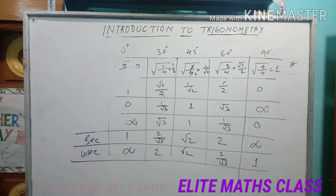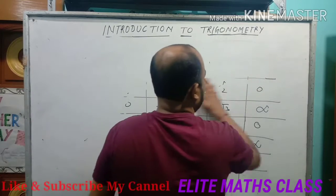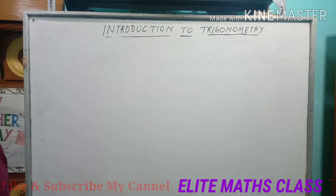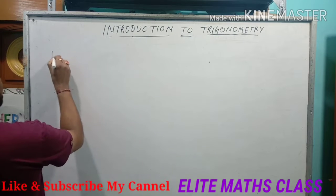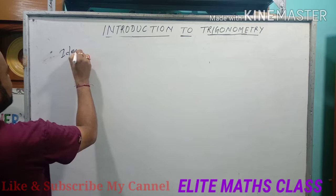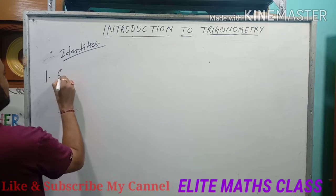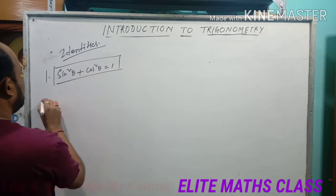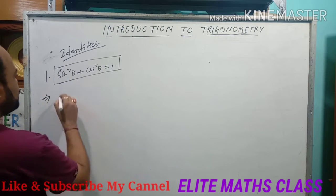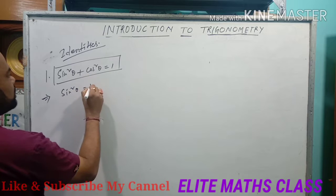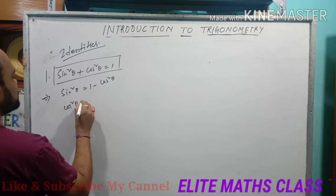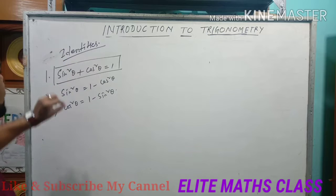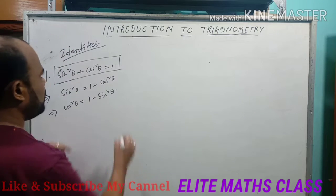Now let's move to the second part. Here, some identities of the trigonometric ratios are discussed. Identities means relations. There are basically three identities. The first identity is: sin²θ + cos²θ = 1. This is the fundamental relation. From this we can get two more: sin²θ = 1 − cos²θ, and cos²θ = 1 − sin²θ. It is better to memorize all three relations.